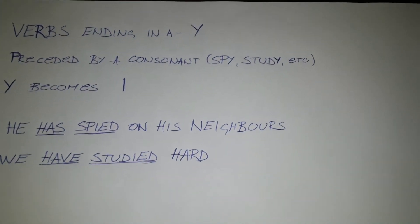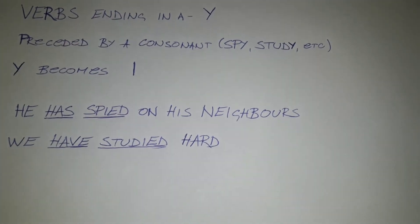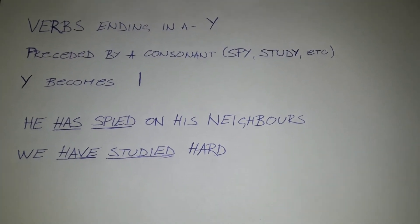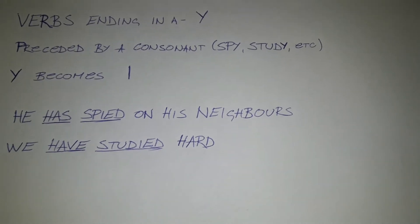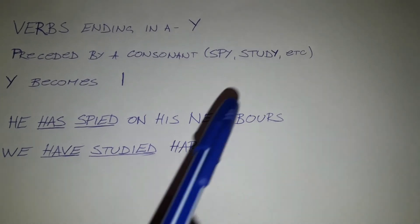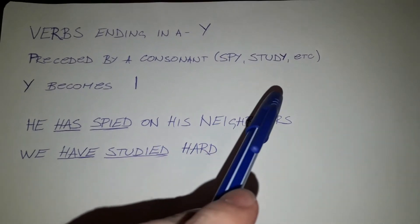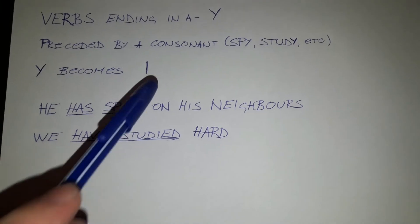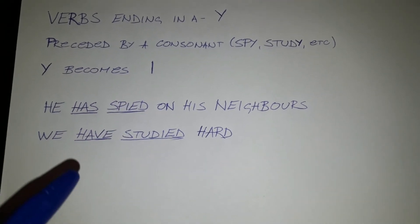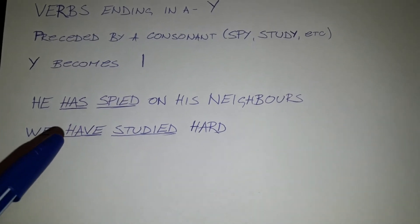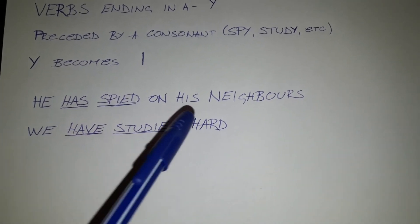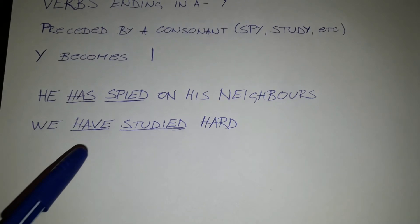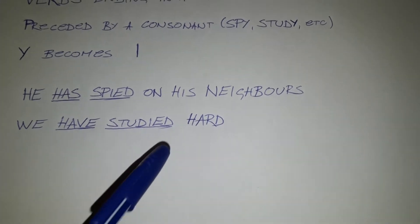We also need to pay attention to verbs that end in -y, especially those preceded by consonants, such as spy or study, because we change the -y into -i. So for example: he has spied on his neighbors. We have studied hard.